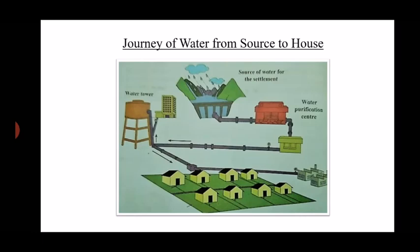Journey of water from source to house: two steps are involved — from the source to the water tower, and from the water tower to our houses. Rainwater is collected in the source, sent to the purification plant, purified, and stored in the water tower. Children, why is the water pumped? Because it cannot climb — it flows downwards. So we need to pump it up.